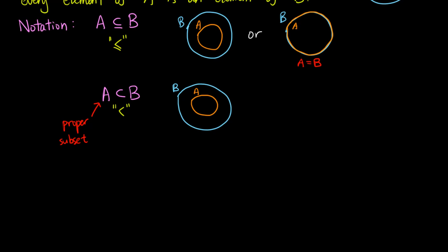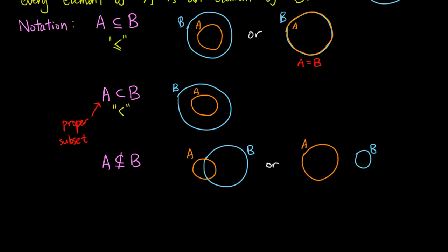We can draw an analogy between these two symbols and the inequalities less than or equal to, and less than. Then we have the symbol representing that A is not a subset of B — in this case, either some elements of A, but not all, lie in B, or A and B have no common elements at all. The last notation means that A is not a proper subset of B. In addition to the two cases just mentioned, it can also be the case that A is actually equal to B.